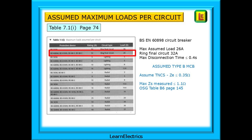In a domestic scenario, not every socket will be in use at the same time and not all equipment will be on at the same time. The breaker we've decided will be a Type B with a disconnection time of not more than 0.4 seconds. ZE for the circuit will be 0.35 ohms maximum, and ZS should not be more than 1.1 ohms when measured on site with a test meter. Do note, Table 7.1.1 shows the breaker as BS60898 when in fact it should say BSEN60898, but we knew that.